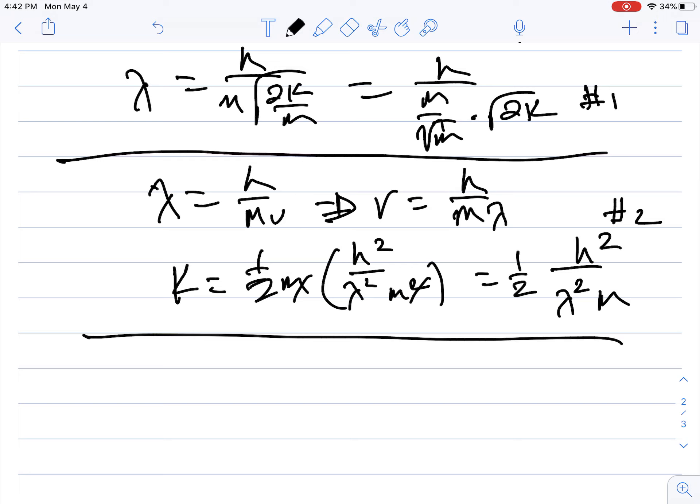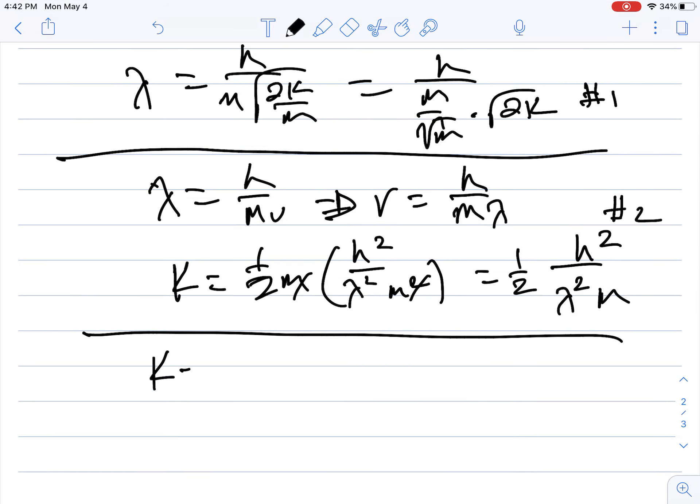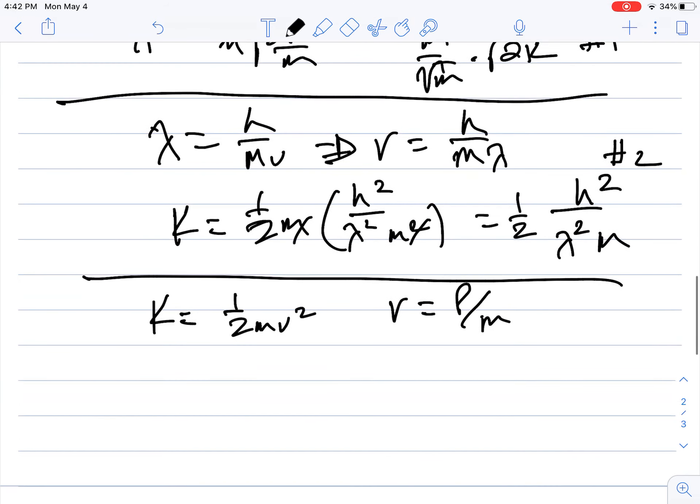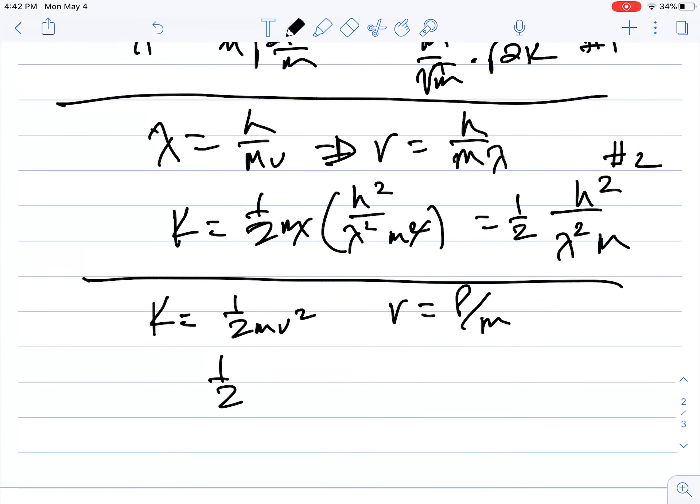And then on the third one, we're gonna go kinetic energy equals one-half m v squared, and if we solve momentum for velocity, we get momentum divided by mass, so we get one-half m times momentum squared over mass squared, and we get momentum squared over 2m.